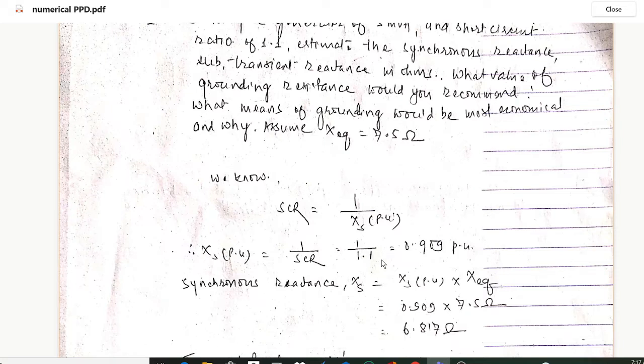SCR is given as 1.1, so 1 upon 1.1 gives 0.909 per unit. In order to calculate the synchronous reactance Xs, Xs will be equal to Xs per unit. Here we have obtained the value of Xs per unit which is 0.909 per unit.